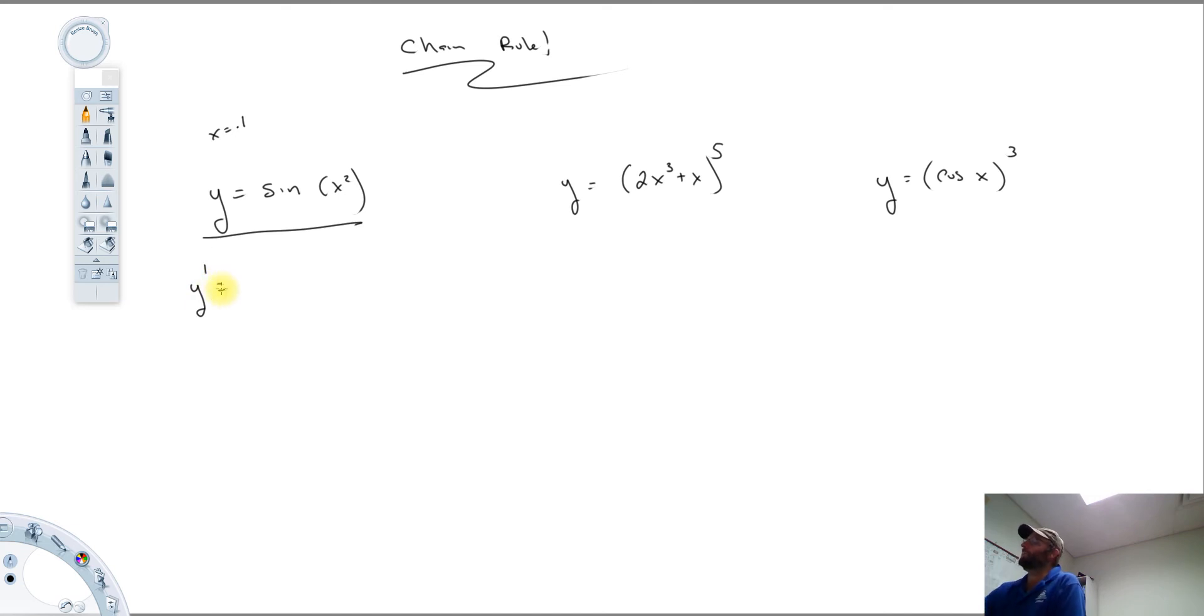So when we differentiate this function, when we differentiate the sine first, the derivative of sine is cosine. So the first term is going to be cosine of x squared. This has now been differentiated. Then we move in and differentiate the inside function. We're going to have times 2x.